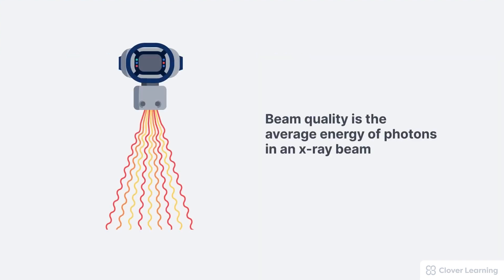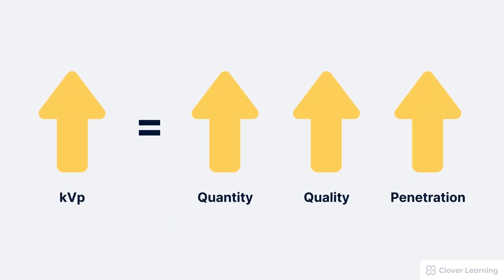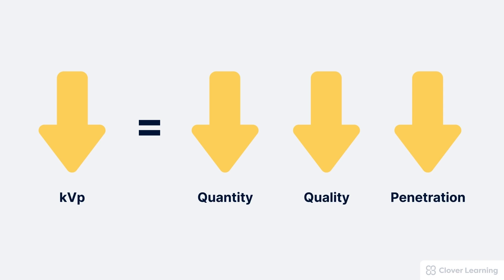To sum up, quality describes the average energy of the photons in an x-ray beam, and one of the factors affecting beam quality is the kVp. When we increase the kVp, this results in increased quantity because there are more x-ray photons, increased quality because the average energy is increased, and also increased penetration through the patient. The opposite is also true: if we decrease the kVp, this decreases the quantity because there are fewer x-ray photons, it also decreases the quality — meaning the average energy has decreased — and the average penetration through the patient has also decreased.